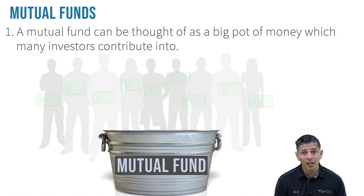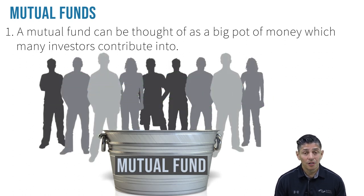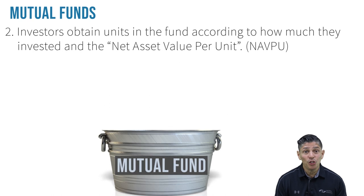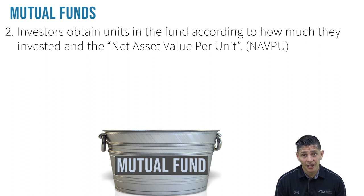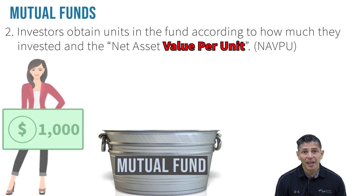Number one, a mutual fund can be thought of as a big pot of money to which many investors contribute. Number two, investors obtain units in the fund according to how much they invested and the net asset value per unit at the time the order is processed. Net asset value per unit is just a fancy term for the value of each unit.